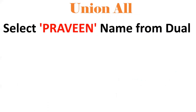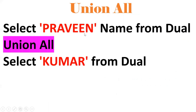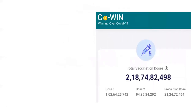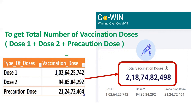Now we'll see UNION ALL. This is a set operator. For example, SELECT 'pravin' FROM DUAL and SELECT 'kumar' FROM DUAL — these are two separate SELECT statements. If I want to club them into a single result set, I use UNION ALL. The result would show 'pravin' and 'kumar' combined into one result set.